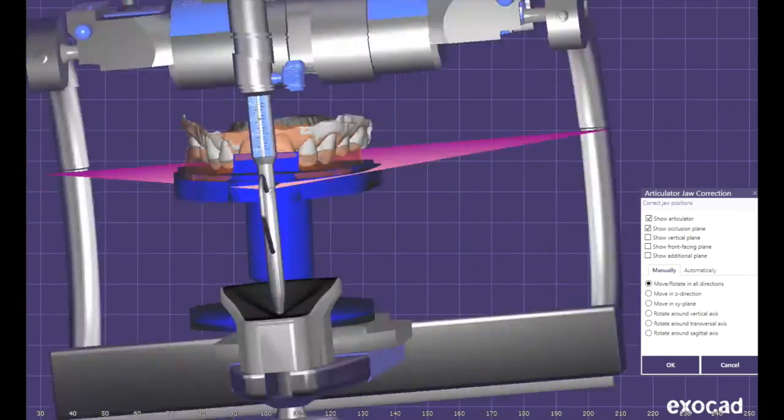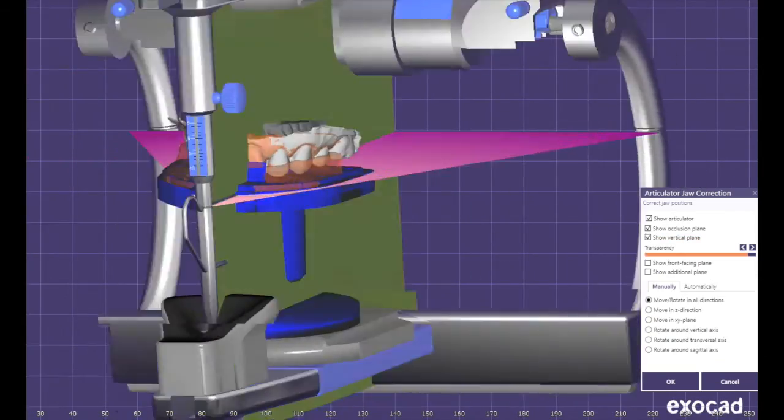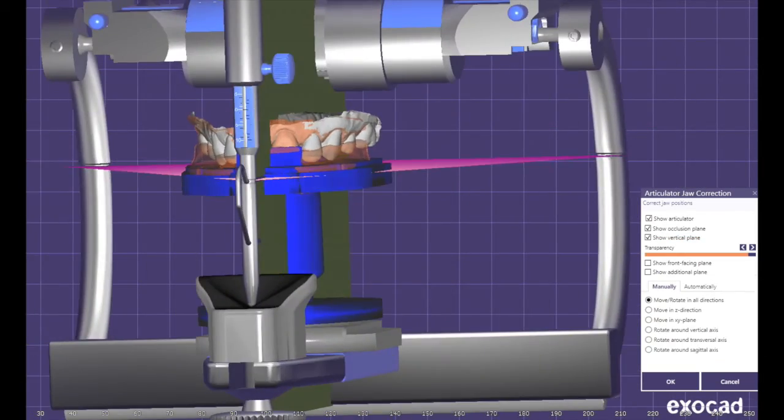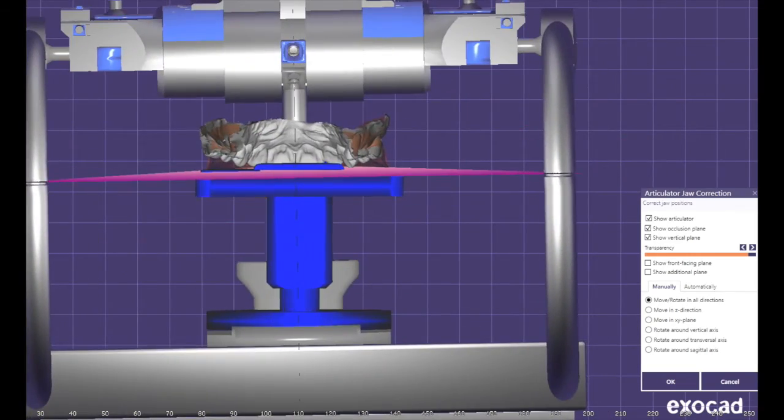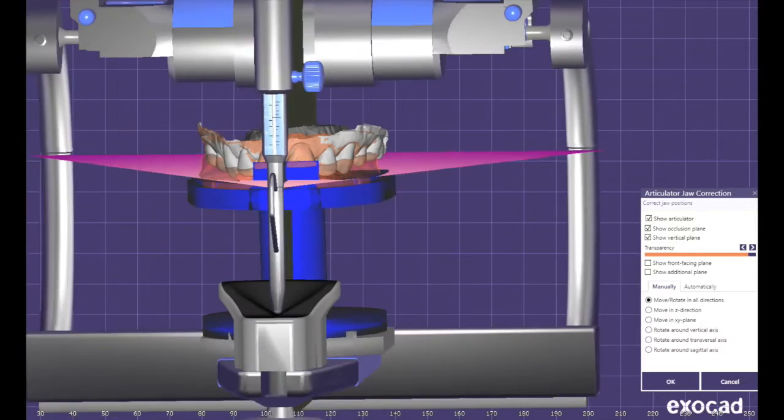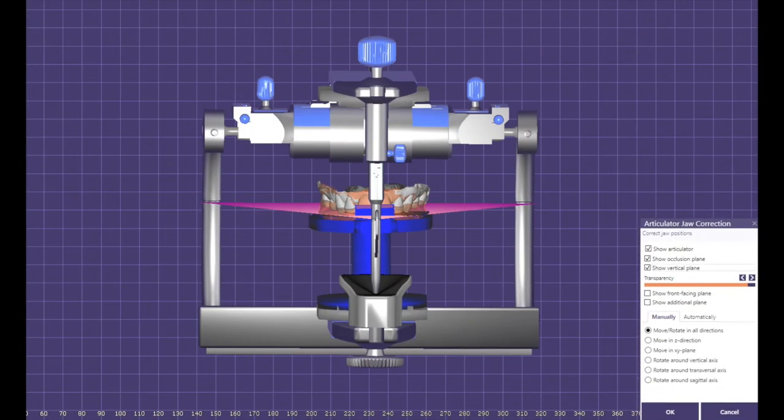You can use the vertical and horizontal planes to help you positioning the stand. Ideally maybe ExoCAD can allow for direct orientation using matching points between the articulator and the stand later on.